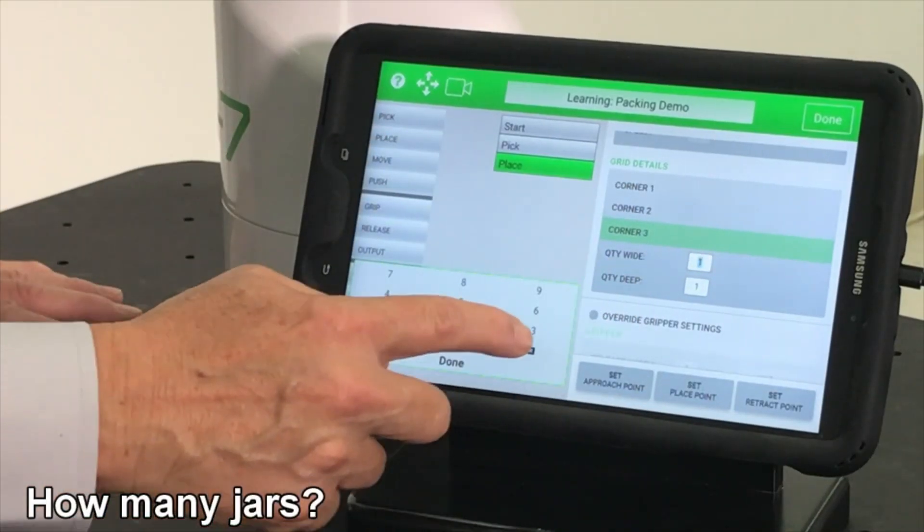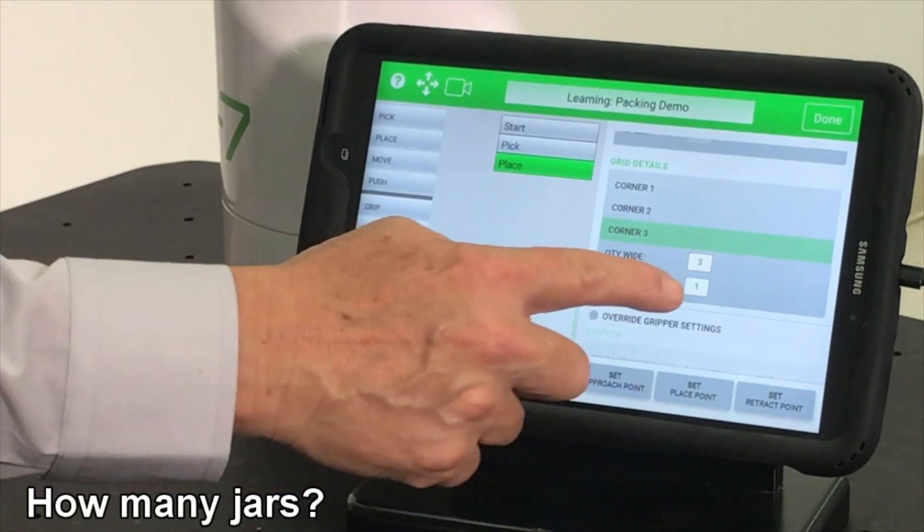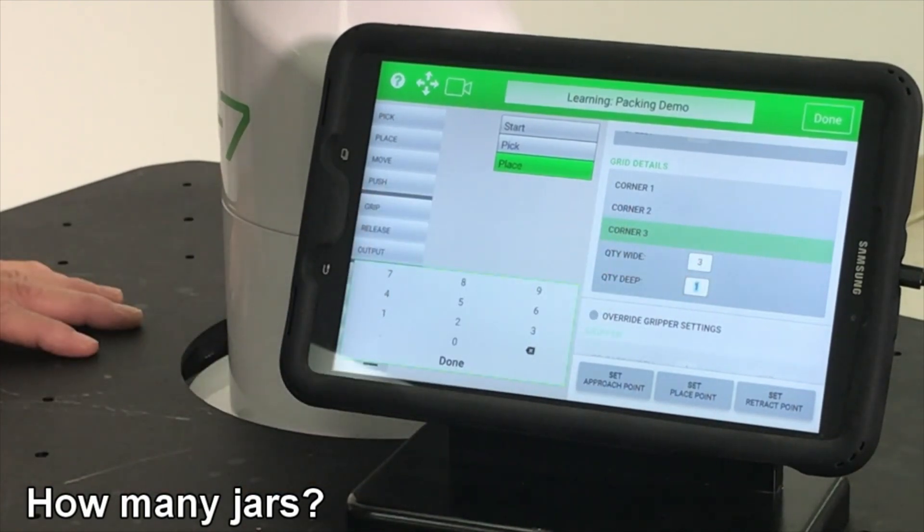On the tablet, enter the number of jars. Four across in three rows. Now OB7 can pack the entire carton.